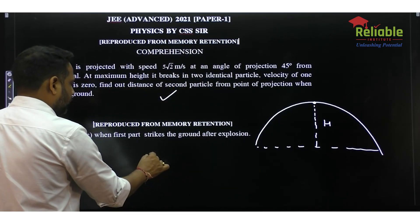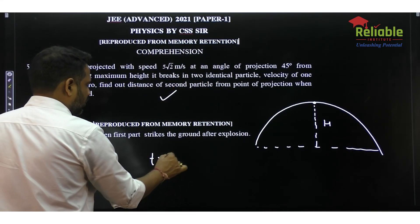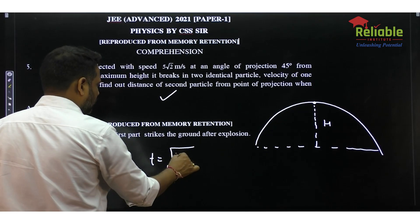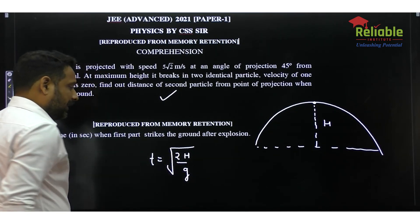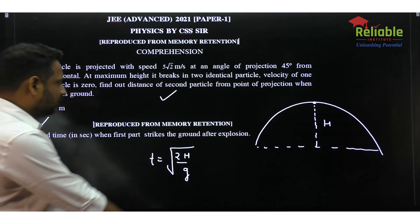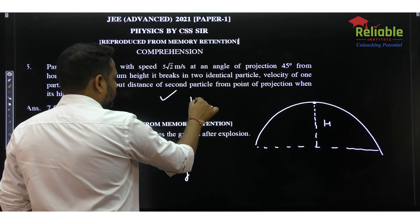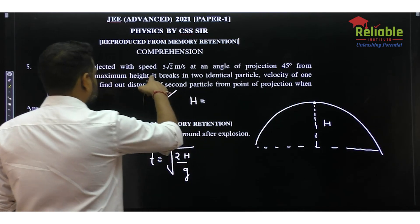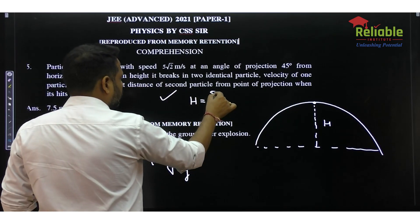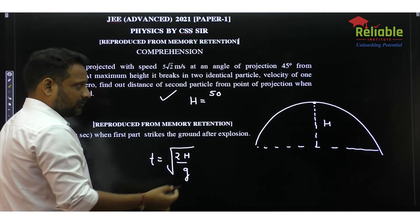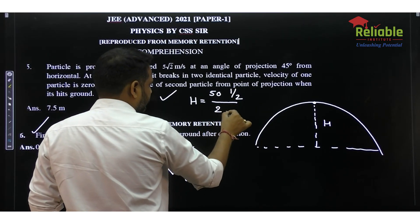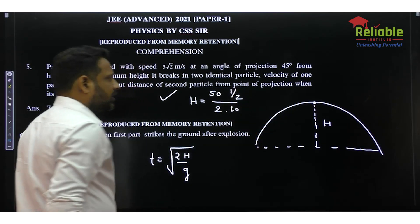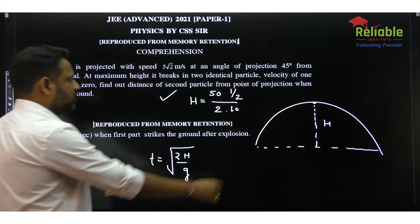Then the time will be under root 2h by g. Use a simple formula: h is equal to half gt square. But what is the value of h? The maximum height is u square which is 50, sin square theta which is 1 upon 2 divided by 2g. U square sin square theta divided by 2g.